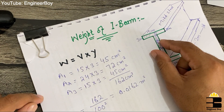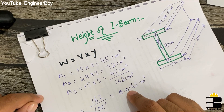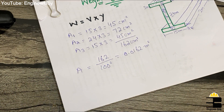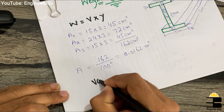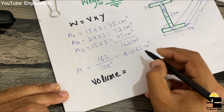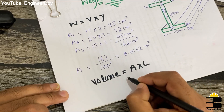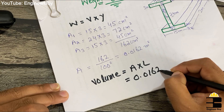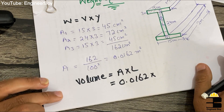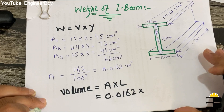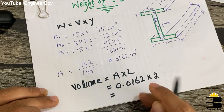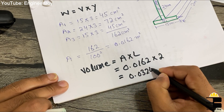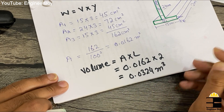Now we need the volume of the beam, which equals the cross-sectional area times the length. Volume = 0.0162 m² × 2 m = 0.0324 cubic meters.